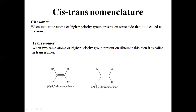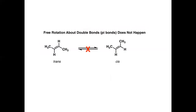Both the cis and trans molecules are called geometrical isomers of each other because they differ in the arrangement of the bromine atom around the carbon-carbon double bond. The trans-isomer can never be converted into the cis-isomer, and vice versa — the cis-isomer can never be converted into the trans-isomer.